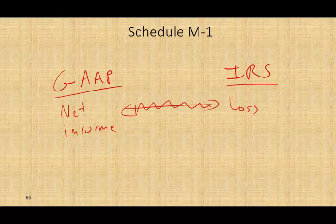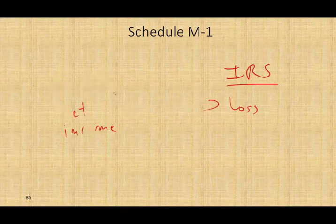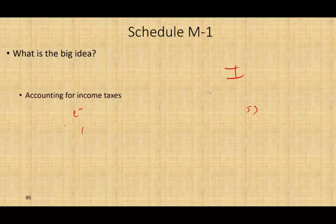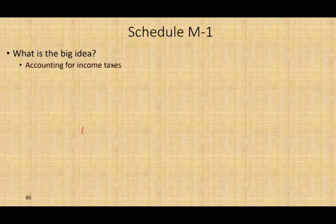Whatever those differences are, if that difference is constantly wide, you'll be audited. There's going to be a difference because GAAP uses different rules than the IRS, but the IRS wants to see why that difference exists. On Schedule M1, we will reconcile those differences. If you already took intermediate accounting and studied accounting for income taxes, this is going to make your life easier in this session.